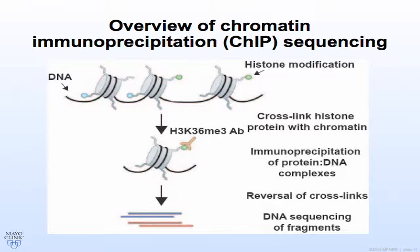An overview of chromatin immunoprecipitation sequencing: it takes advantage of DNA-protein interactions. You cross-link with formaldehyde to bind histone proteins to chromatin, then use an antibody specific to the histone modification to immunoprecipitate the protein-DNA complexes. After reversing the cross-links, you sequence the resulting DNA fragments and align them to the human genome to identify where histone modifications are laid down across the genome.